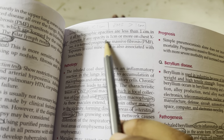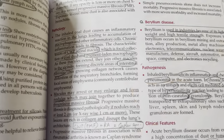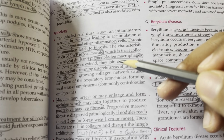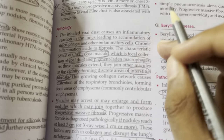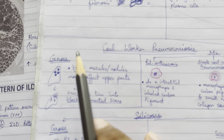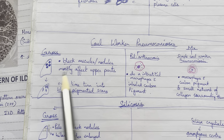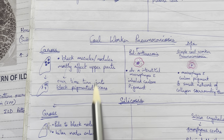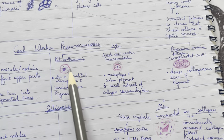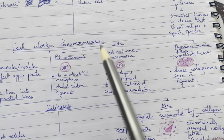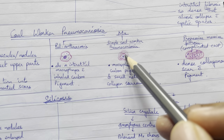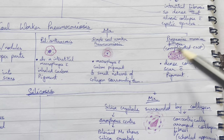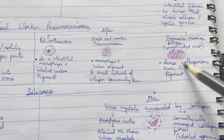Inhaled coal dust causes inflammatory reaction, activating macrophages that ingest coal — coal-laden macrophages form. In the upper lung, black macules or nodules develop, becoming black pigmented scars. Microscopically: pulmonary anthracosis shows alveolar interstitial macrophages with ingested carbon pigment. Simple CWP shows alveoli with coal surrounded by a small collagen network; progressive massive fibrosis shows dense collagenous scar with coal pigment.